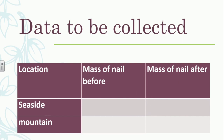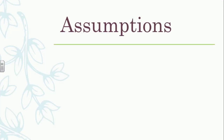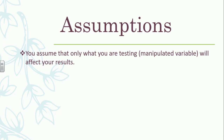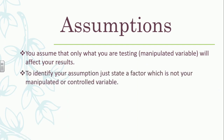Now, assumptions — this is a very big and difficult part of planning and designing labs. You assume that the thing you are testing — the manipulated variable — is the only thing that will affect your results. It's the only thing that will cause a change in your experiment. To identify your assumption so you can write it down and get a mark for it, you need to be able to identify and state it clearly.